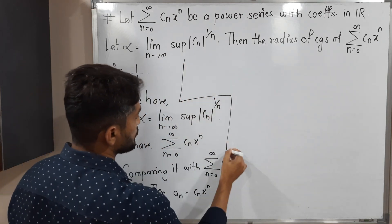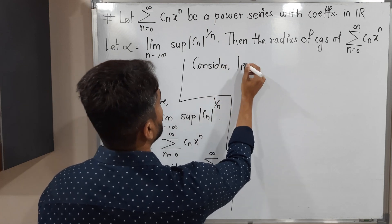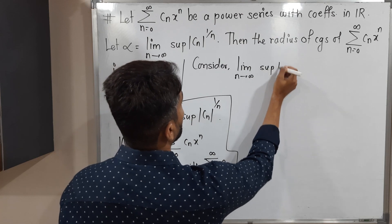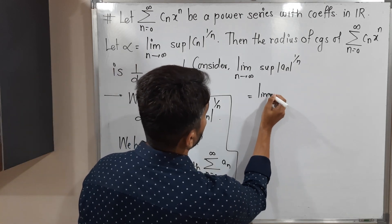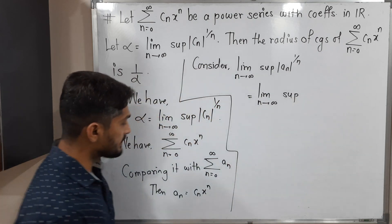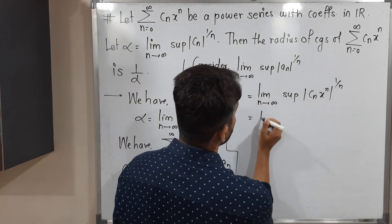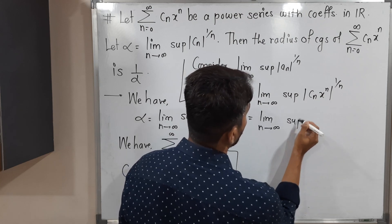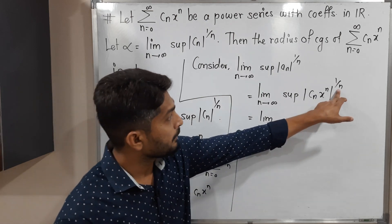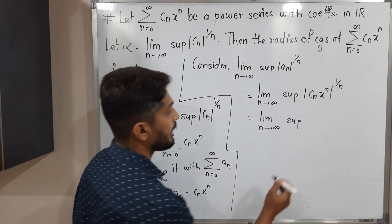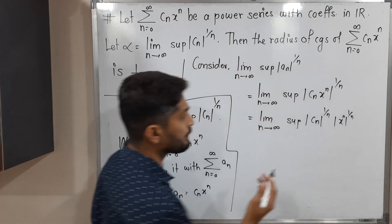Consider the limit as n tends to infinity of the supremum of |aₙ|^(1/n). We want to calculate its value. This equals the limit as n tends to infinity of the supremum of |cₙxⁿ|^(1/n). Since there is a modulus and multiplication, we can take separate moduli and separate powers, giving us |cₙ|^(1/n) times |x|^(n·(1/n)).